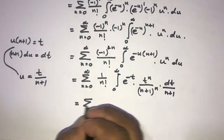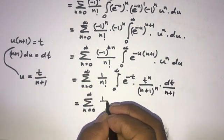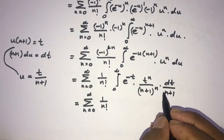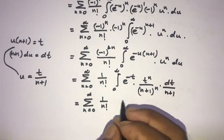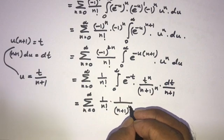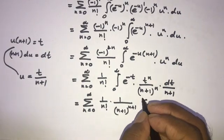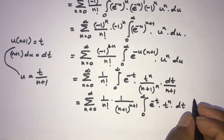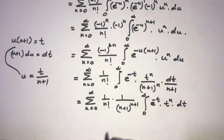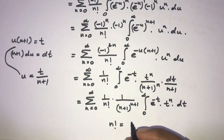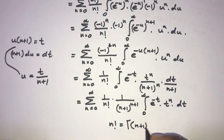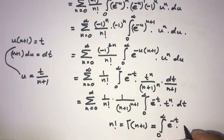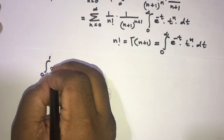After substitution, the integral becomes: 1 over (n+1)^n times 1 over (n+1) — giving 1 over (n+1)^(n+1) — times the integral from 0 to infinity of e^(-t) times t^n dt. This inner integral is the Gamma function: we know that n factorial equals Gamma(n+1), which equals the integral from 0 to infinity of e^(-t) times t^n dt.